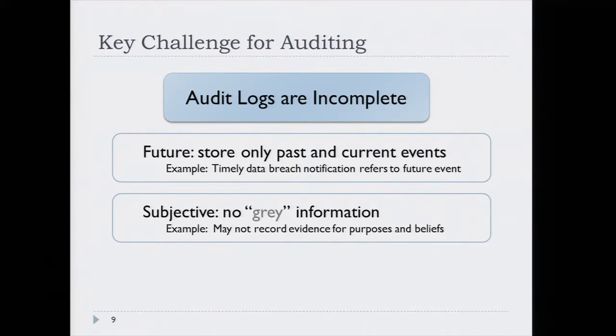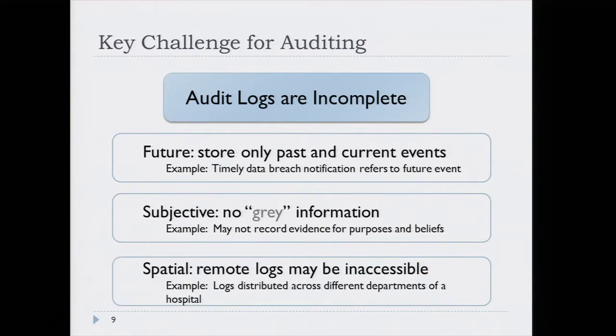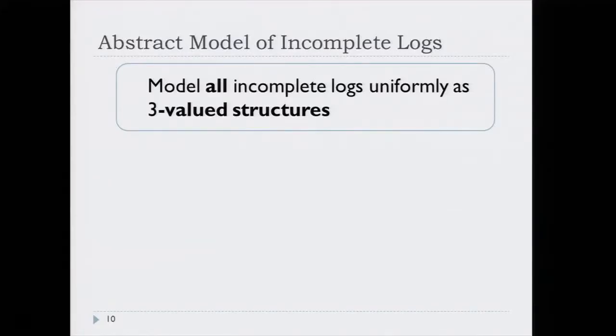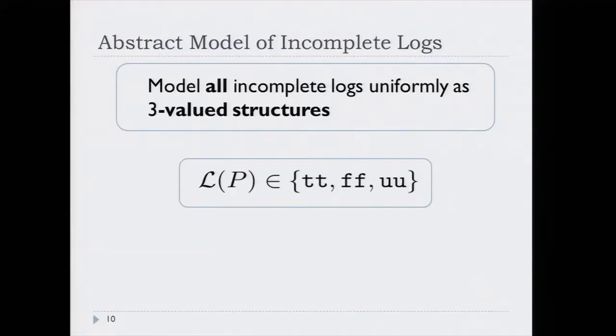The log may not have enough information for the algorithm to make determinations about whether an access was for an appropriate, allowed purpose or not. Sometimes logs are spatially distributed, sometimes logs are encrypted, and the algorithm doesn't have access to all the information. Also, because of privacy concerns, the auditor should not always have access to the entire set of personal information.